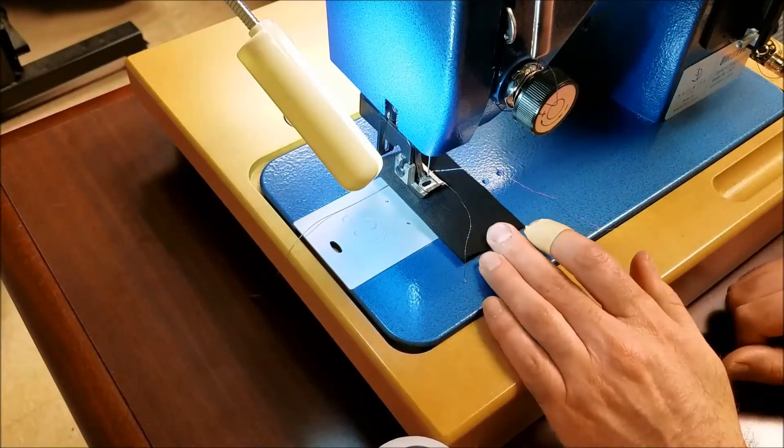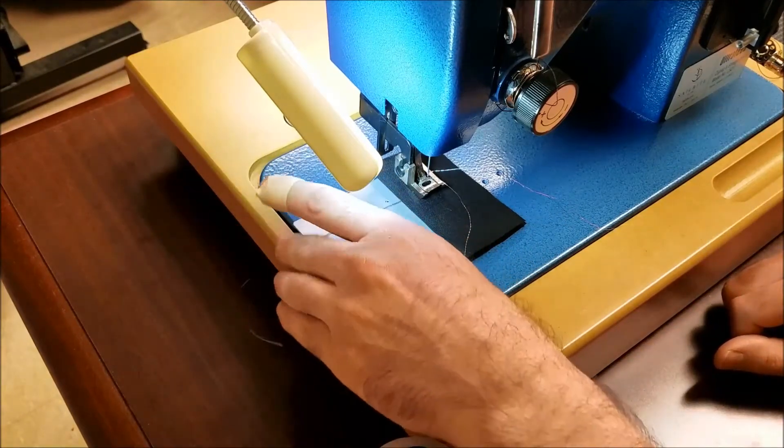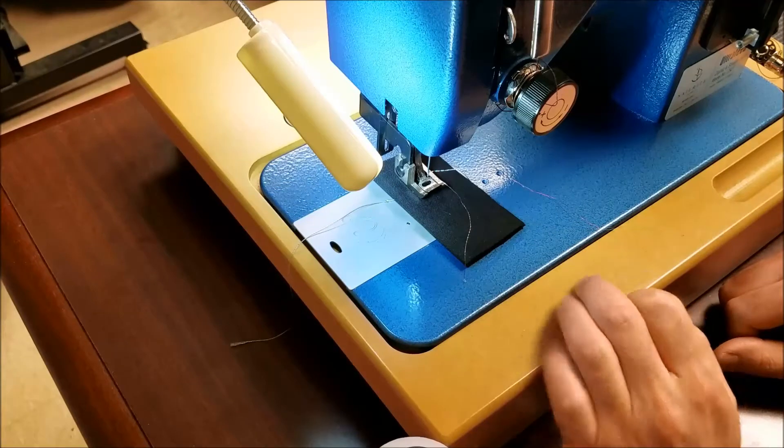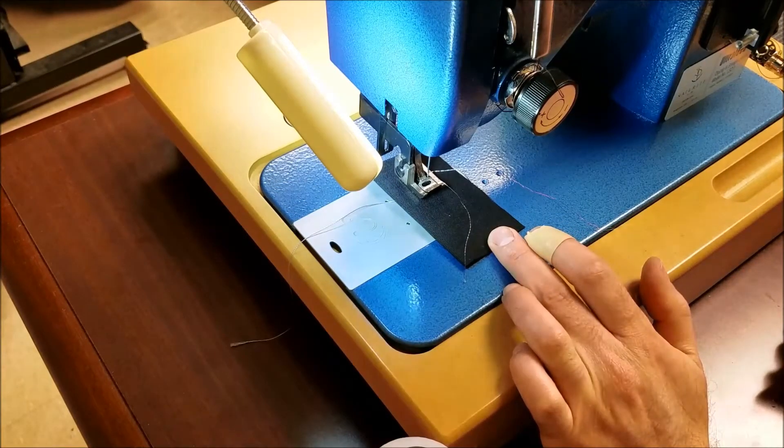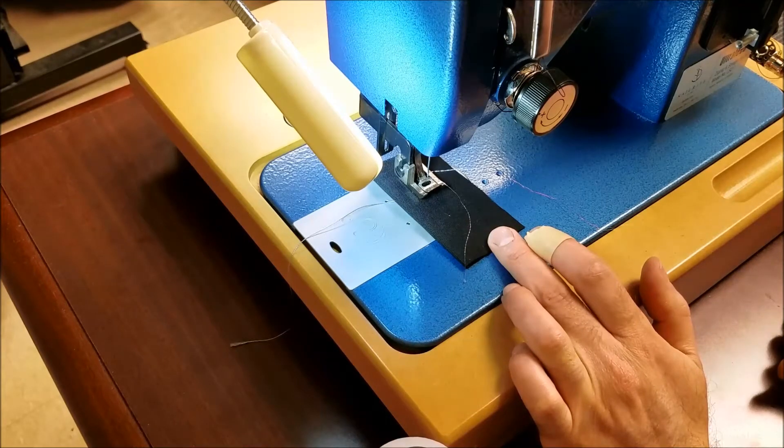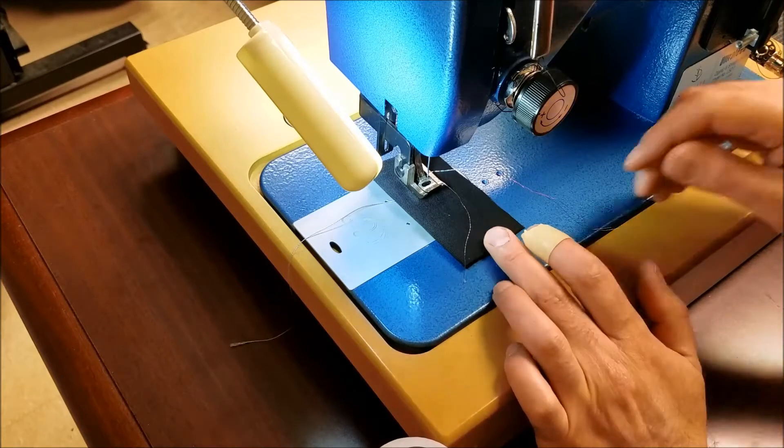Normally you've got the bobbin thread coming out here, and normally I would put the presser foot down to begin sewing. But I'm not going to use the machine sewing component here; I'm just going to use the hand wheel. I'm going to leave this presser foot up because I'm going to need access to the beneath of this fabric area.